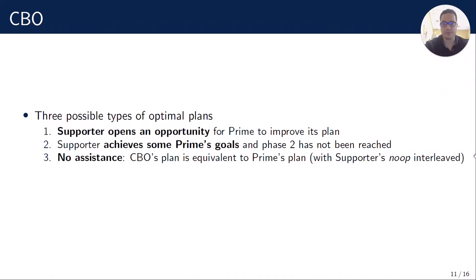There are three possible types of optimal plans in CBO. First, Supporter opens an opportunity for Prime to improve its plan. Second, Supporter achieves some of Prime's goals and phase two has not been reached. And the last one: no assistance. CBO's plan is equivalent to Prime's plan with the Supporter's no-operation interleaved.